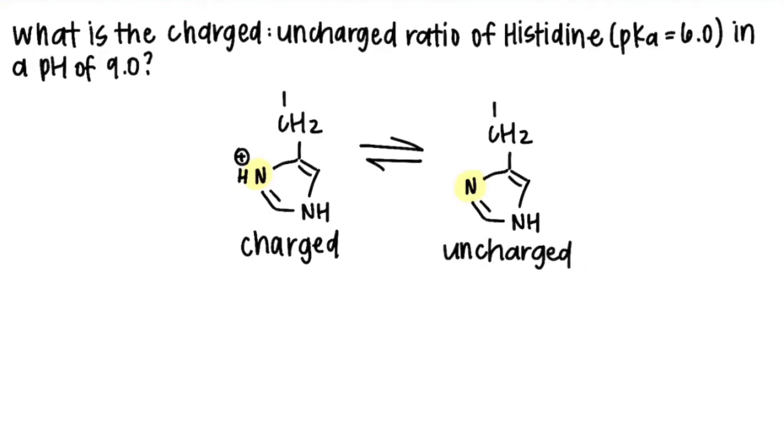The next step is to decide which one is in the acid form and which one is in the base form. The definition of a Bronsted-Lowry acid is that it is a donor. So this acid must have a proton so that it can donate it. So in this case, the left structure is going to be the acid form.